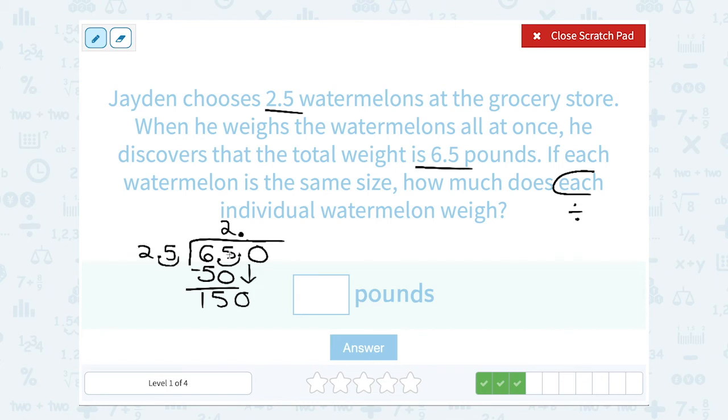And how many times does 25 go into 150? Well 25 goes into 100 four times, and 50 twice, so it's going to go into 150 six times. 25 times 6 is exactly 150. So when I subtract that, I have nothing left. So that's how I know my division problem is done. And my answer is what you see up top, 2.6. So each watermelon weighs 2.6 pounds.